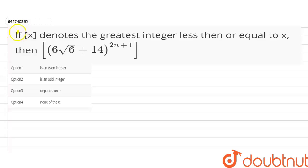The question says that if [x] denotes the greatest integer less than or equal to x, then we have to find the value of [(6√6 + 14)^(2n+1)].